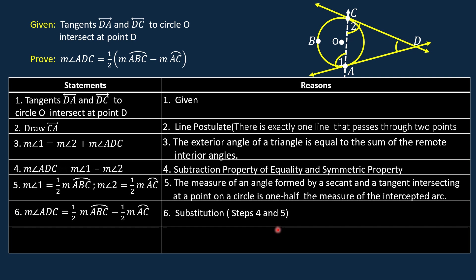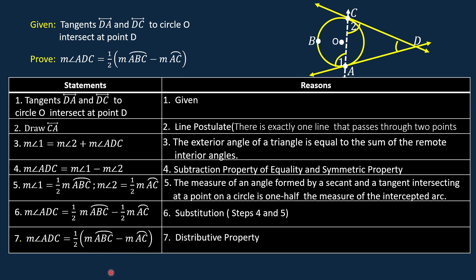And for our last statement, statement number 7, the measure of angle ADC is equal to one half times the quantity: the measure of arc ABC minus the measure of arc AC. The reason: distributive property.